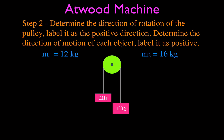For step number two, we want to determine the direction of motion, because we're going to have forces we need to label as either positive or negative. We have a 12-kilogram mass and a larger 16-kilogram mass, so the Atwood machine is going to rotate in the clockwise direction, and we designate that as the positive direction. That means M1 is going up, which we call positive, and M2 is going down, which we also call positive — because both are consistent with the direction of motion of the pulley.